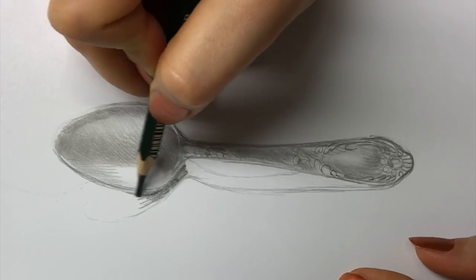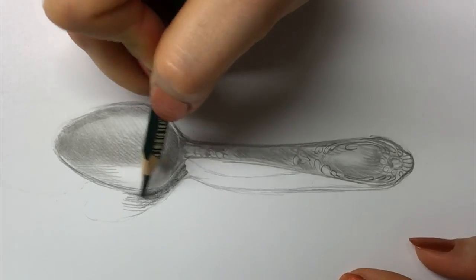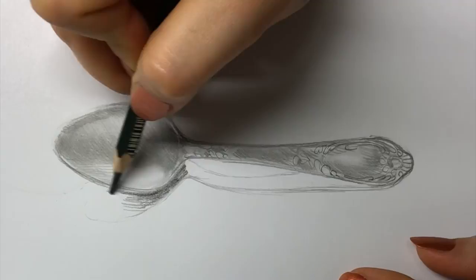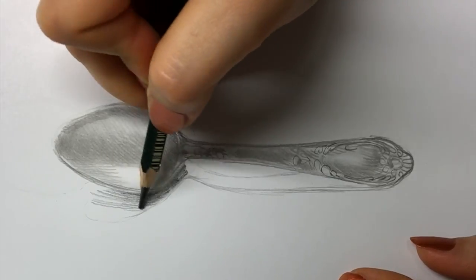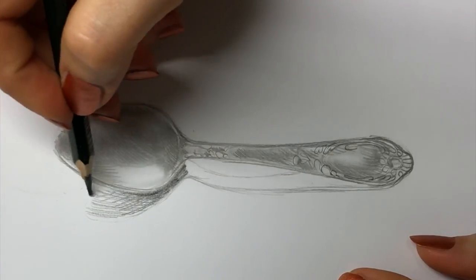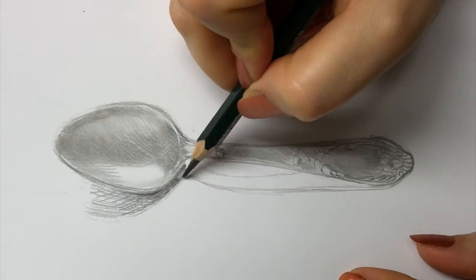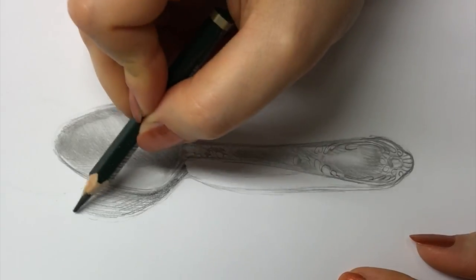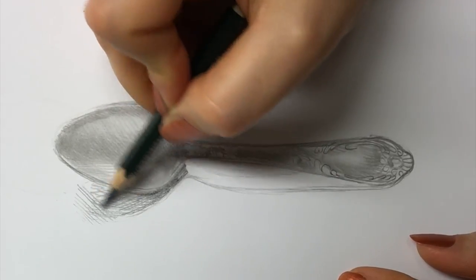And usually when the shadow is closer to the object, it becomes just a little bit darker. And when it gets further away from it, it becomes a little bit soft and a little bit light. And I can see that same thing happening here. Here the shadow is just a bit darker. And here it just hazes out very, very softly.